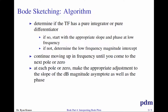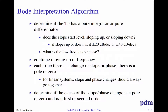Similarly, does the slope start flat? Does it start going down at minus 20 dB per decade? Does it go down to minus 40 dB per decade? Those are first and second order integrators, or does it go up at plus 20 dB per decade or plus 40 dB per decade for single or double differentiators? Slope is flat, phase is zero means we have none of those things. Then we continue moving up in frequency until we come to a pole or zero, and we increment or decrement our slope and phase asymptotes in both cases.